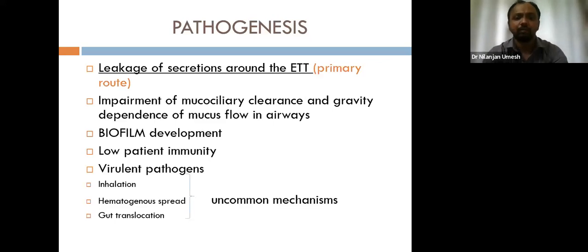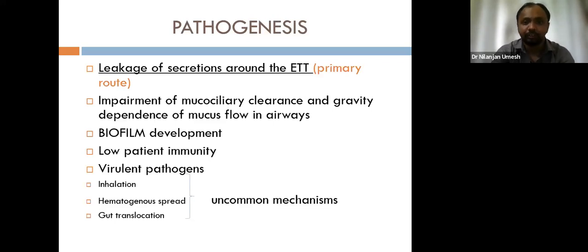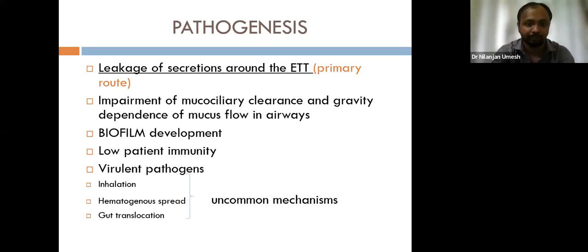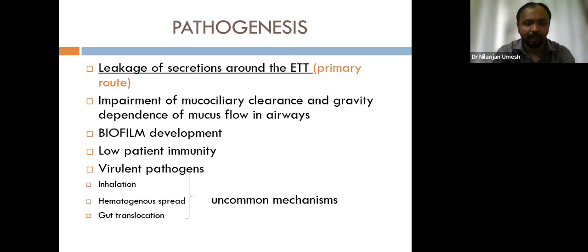Regarding pathogenesis, the primary route is leakage of secretions around the endotracheal tube. Even with a tight cuff and proper tube size, micro-aspirations can still occur along the sides of the endotracheal tube. Other mechanisms include impairment of mucociliary clearance, gravity-dependent mucus flow, biofilm development, low patient immunity, and virulent pathogens. Uncommon mechanisms include inhalation, hematogenous spread, and gut translocation.